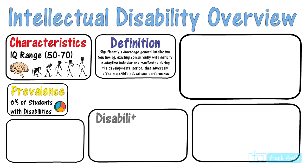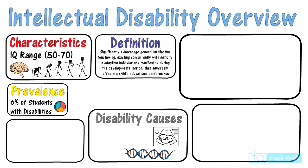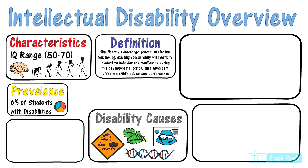We'll look at some of the causes of this particular disability. One factor is that it is a genetic condition where genes are passed on from parents to offspring. Intellectual disabilities can also be caused by complications during birth, exposure to corrosive and dangerous chemicals, and there is evidence that malnutrition may be a possible cause as well.